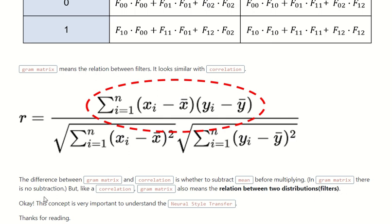Like correlation, the Gram matrix also represents the relation between two distributions—in this case, the filters. This concept is very important to understand neural style transfer.